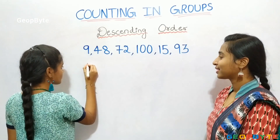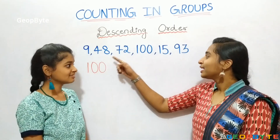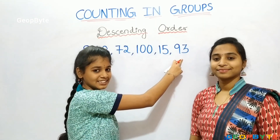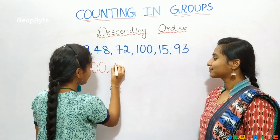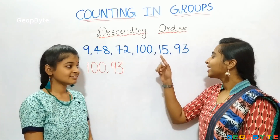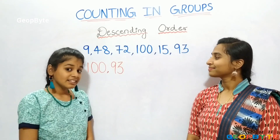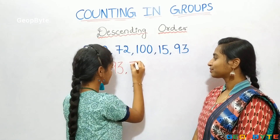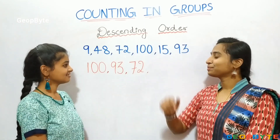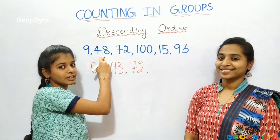Let us write. Which is the largest number in this arrangement? Yes, correct answer — 93 is the larger number. Let us write. Which is the large number in this arrangement? Yes, correct answer — 72 is the large number. Let us write. Which is the small number in this arrangement? Yes, correct answer — 48 is the small number. Let us write.